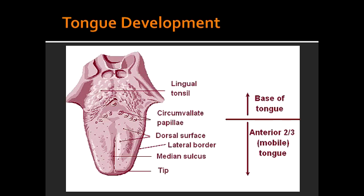What nerve innervates the anterior two-thirds of the tongue for taste? Cranial nerve VII, which is the facial nerve, is responsible for taste in the anterior two-thirds of the tongue.